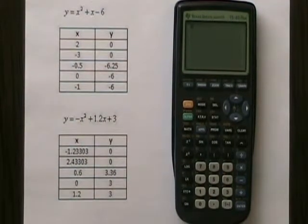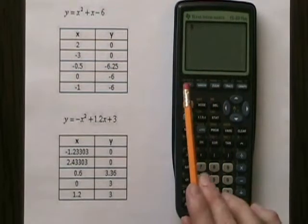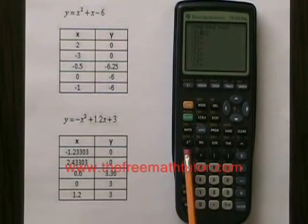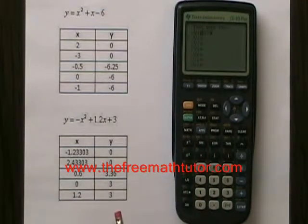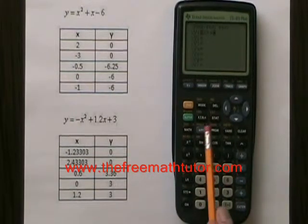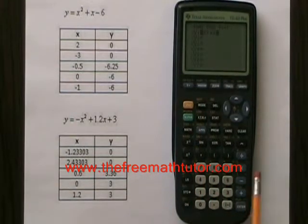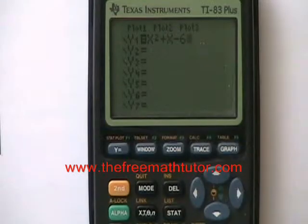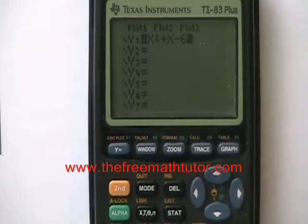I'm going to enter the equation by pressing the Y= button, then the X button. Now I press the X² button to square the x, plus the X button again, minus 6. My equation is entered, and to look at it, I will press the GRAPH button.